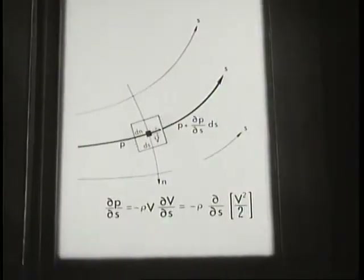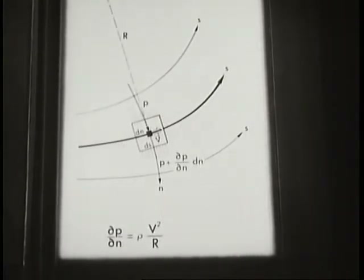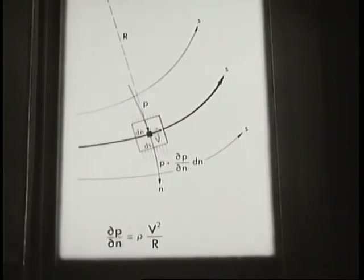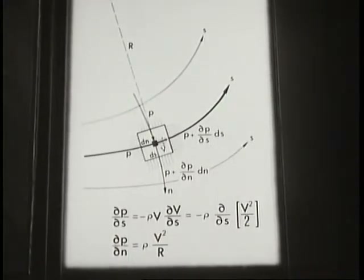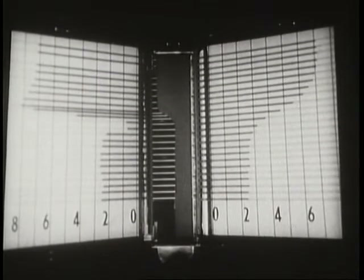So far we've looked separately at the pressure gradients along and normal to the streamline. To understand a complete flow pattern however we must consider both of these, and of course we must also consider the equation of continuity to ensure that mass is conserved. Our flexible wall rig now is in the form of half of a rapid symmetrical contraction.